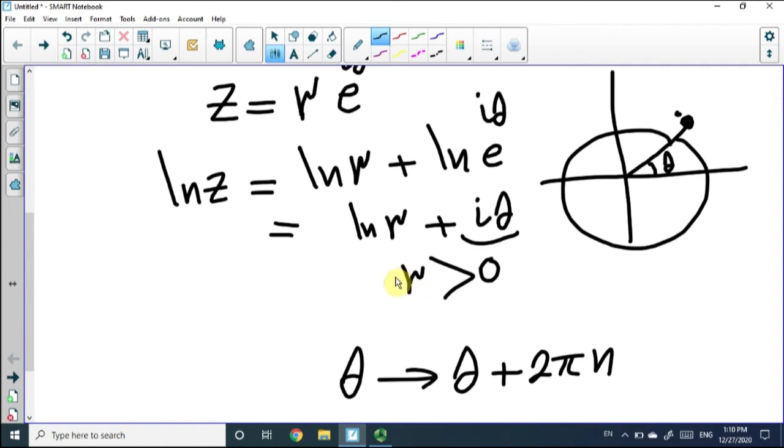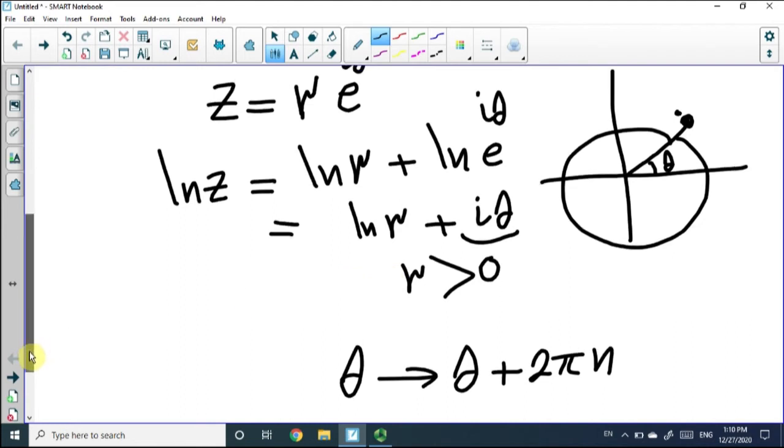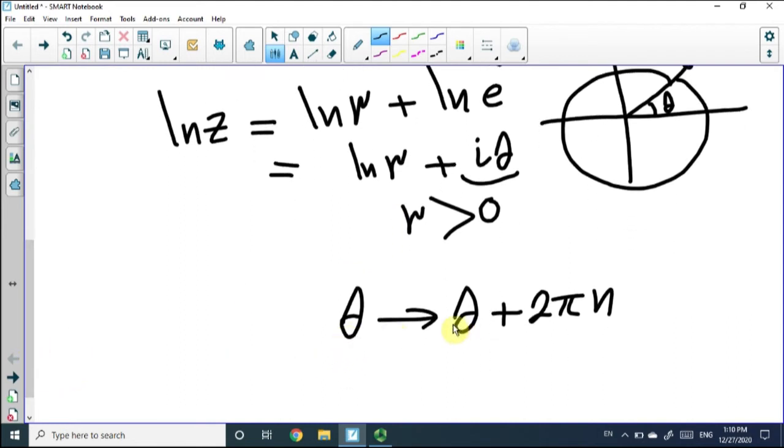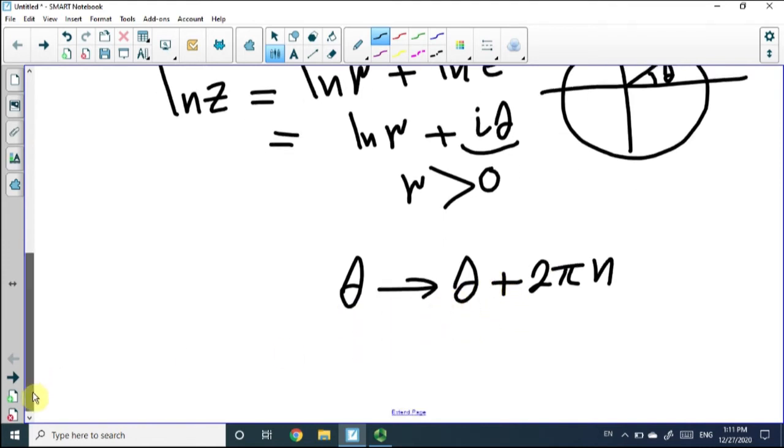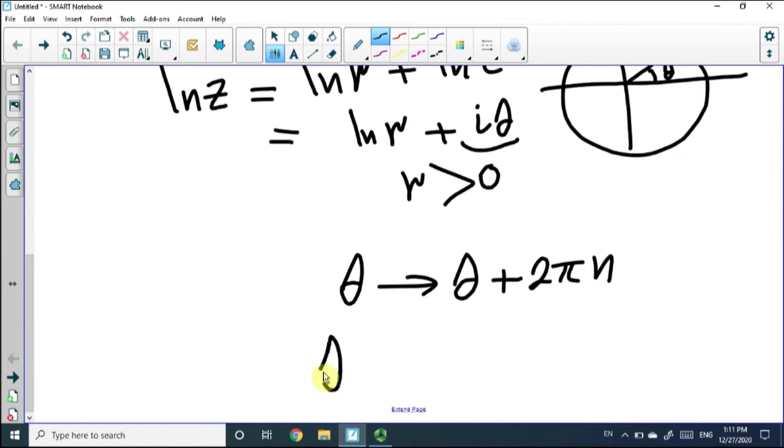This is a problem with the logarithmic function, and the way, usually, to solve it is not to allow theta to go over and over above two pi. For example, we can restrict theta, let's say, to be between zero and two pi, and I'm going to put an equal sign to one of them, like this.